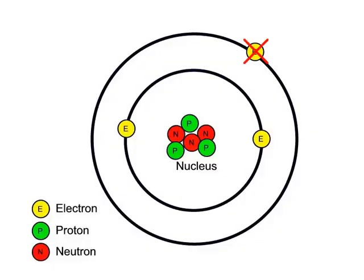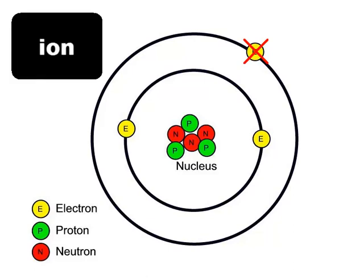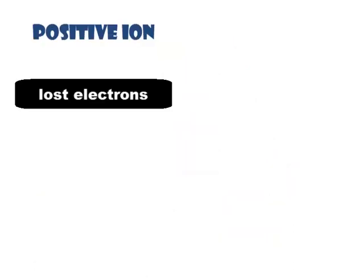If an electron is removed from an atom, the atom is no longer neutral. It has one more positive charge than negative charge. We call a charged atom an ion. A positive ion has a net positive charge—it lost one or more electrons.